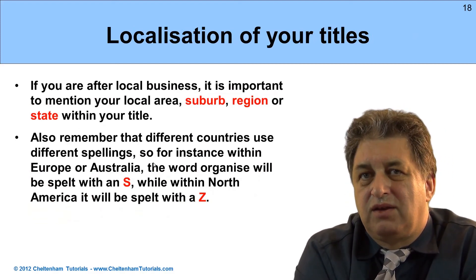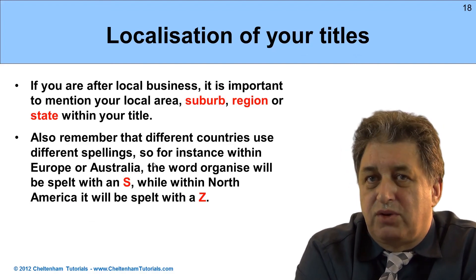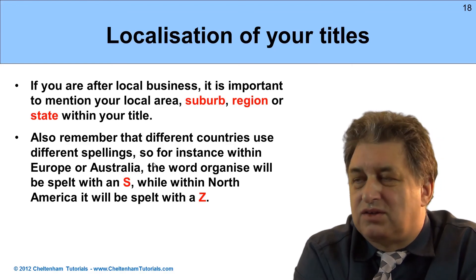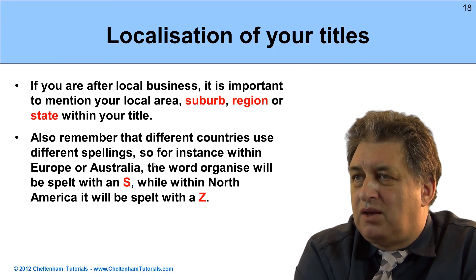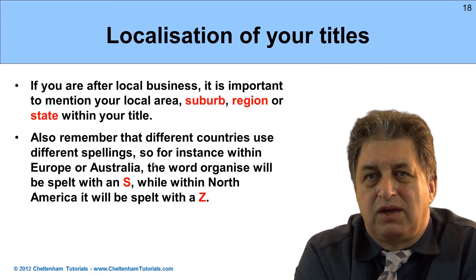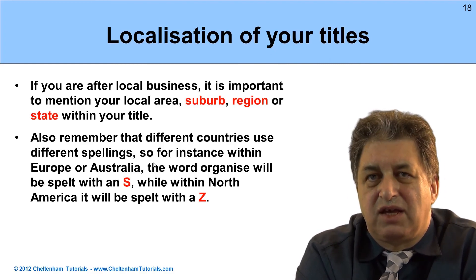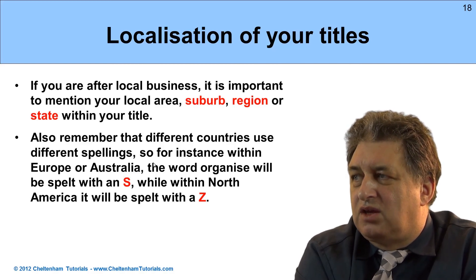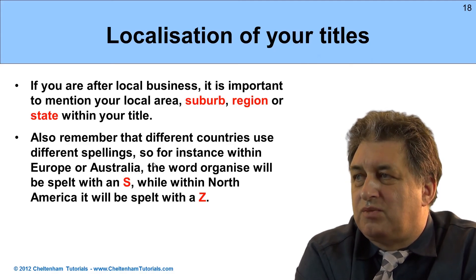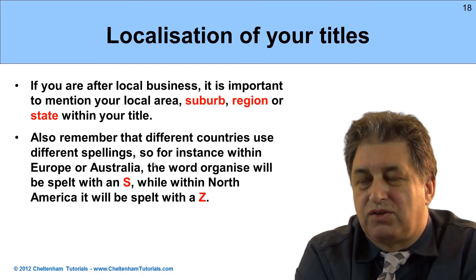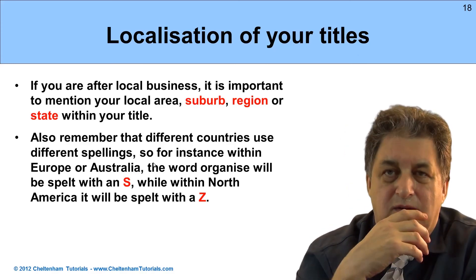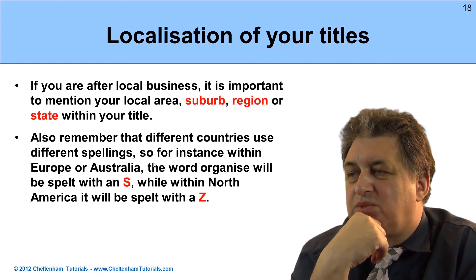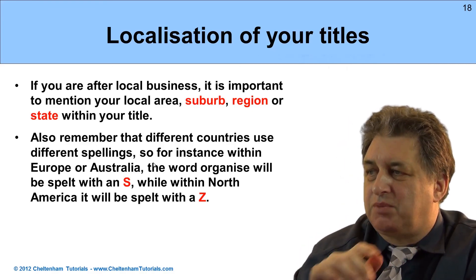For localization of titles: these days a lot of people search for a local service or supplier. If you're a national or multinational mail-order company this is less important, but for a plumber, for example, most work fairly locally — at suburb, region, state, or city level. Always think about including suburbs, region, or state within the title itself — something like 'Plumbing Service Perth'. Also bear in mind that different countries use different spellings — for instance, in Europe and Australia the word 'organized' is spelled with an S, whereas in North America it's spelled with a Z. Consider your target market's spelling conventions.